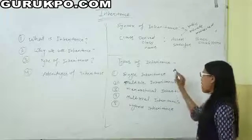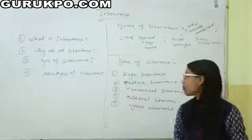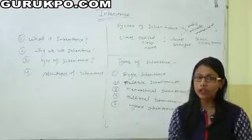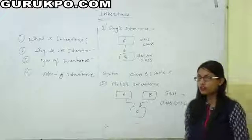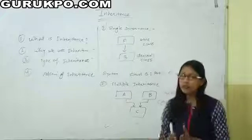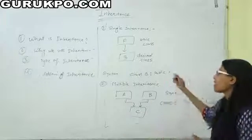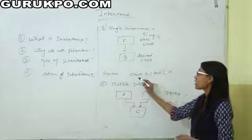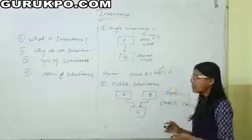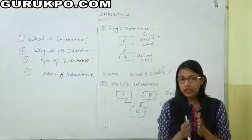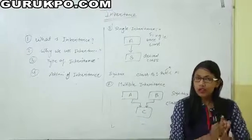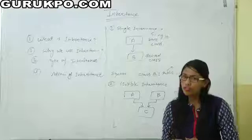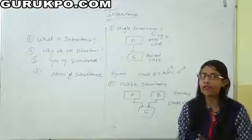Next, our topic is the types of inheritance. In OOP, five types of inheritance are used: single inheritance, multiple inheritance, hierarchical inheritance, multilevel inheritance, and hybrid inheritance. Single inheritance is the simplest form, where one derived class inherits only a single base class. The syntax is: class DerivedClassName colon public BaseClassName. Using this, all data members and functions of the base class can be used in the derived class without modification.